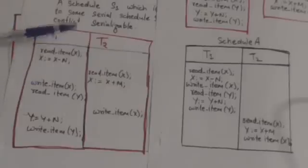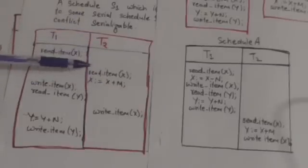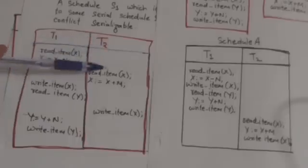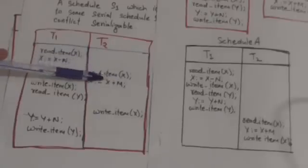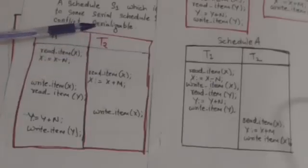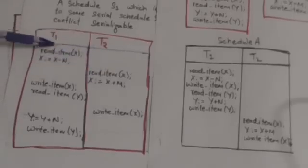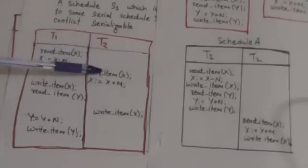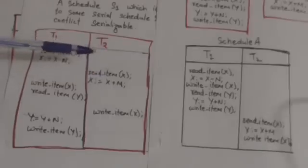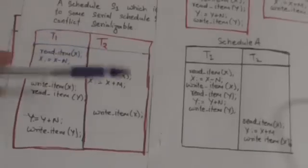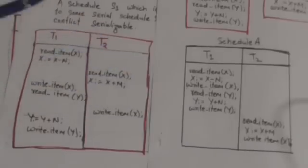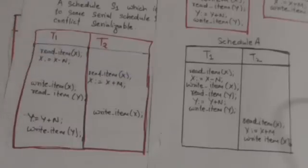But in this schedule, this read operation of transaction T2 reads the value of X that was in the database before the schedule started — it does not read the value of X written by transaction T1. So here, the second condition of view equivalence has not been satisfied, therefore these two schedules are not view equivalent to each other.